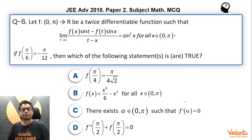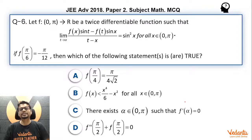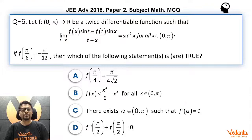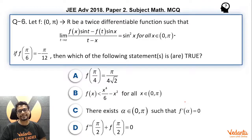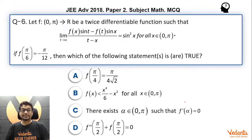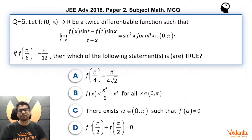Let there be a function f whose domain is (0, π) open and the co-domain is all real values. It is a twice differentiable function such that limit t tending to x of [f(x)·sin(t) − f(t)·sin(x)] divided by (t − x) equals sin²(x) for all x in (0, π). If f(π/6) = −π/12, then which of the following statements are true? It is a multiple correct type question with four options.